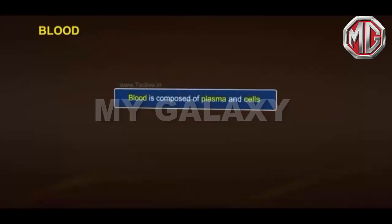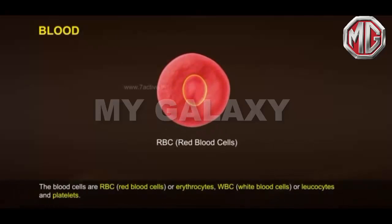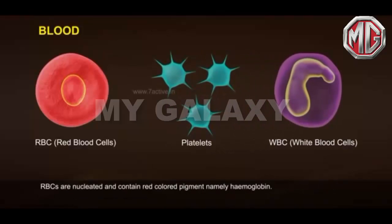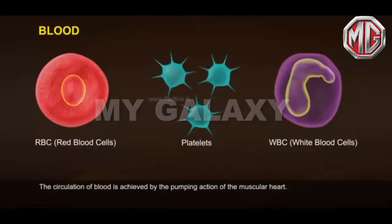Blood: Blood is composed of plasma and cells. The blood cells are RBCs (red blood cells or erythrocytes), WBCs (white blood cells or leukocytes), and platelets. RBCs are nucleated and contain the red-colored pigment hemoglobin. The lymph is different from blood — it lacks certain proteins and RBCs. The blood carries nutrients, gases and water to the respective sites during circulation, achieved by the pumping action of the muscular heart.